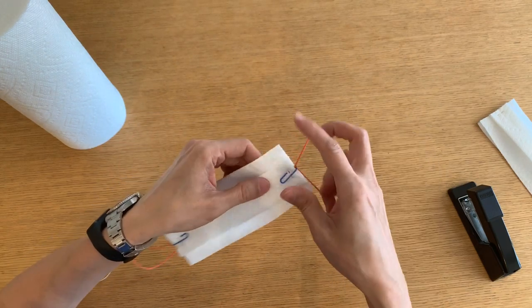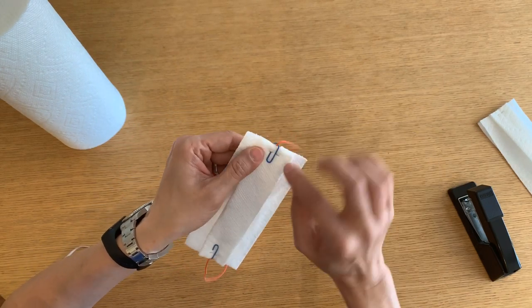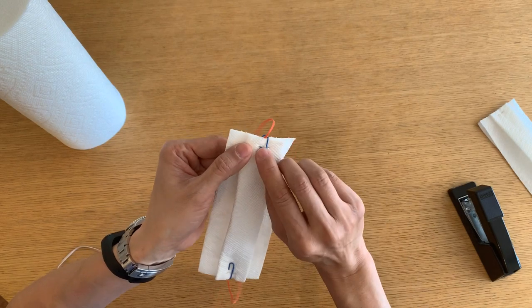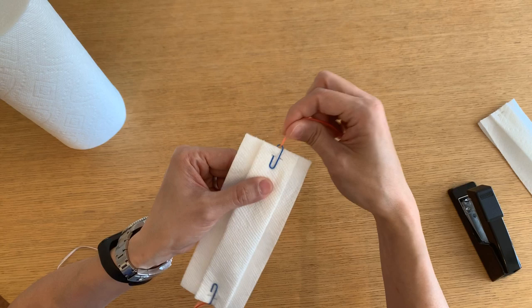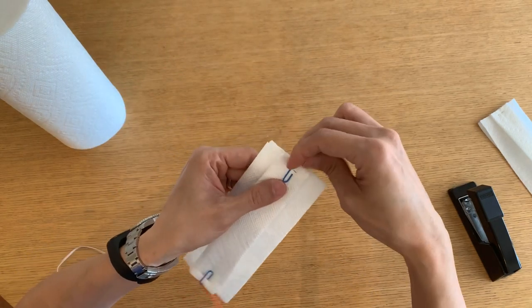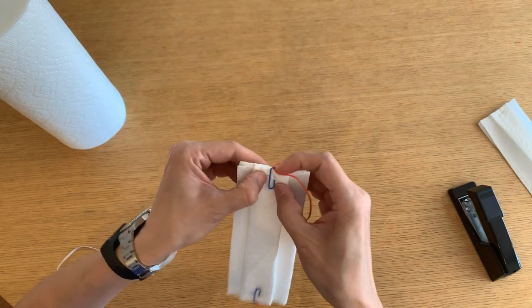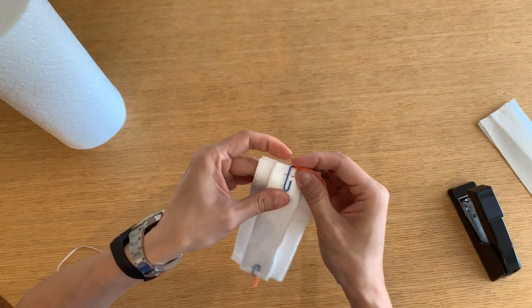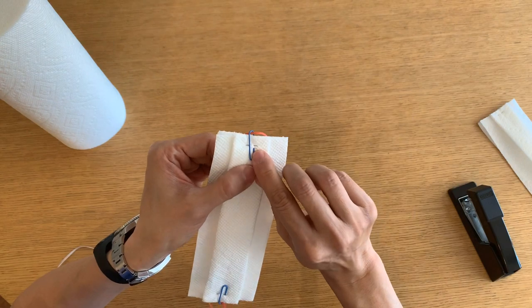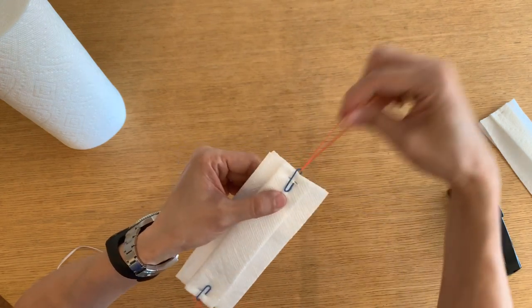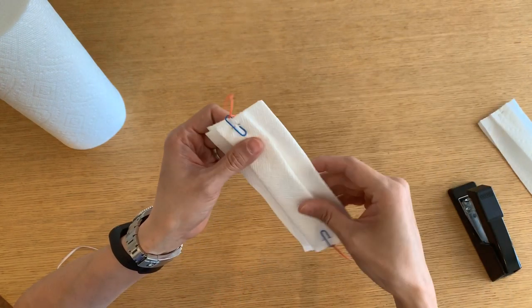And then make sure that this small loop is pressed up against the stapler staple. And then this way it doesn't fly off your face. So make sure that's behind it. And then when you pull on it, this should be behind the staple. This way it will catch on to it.